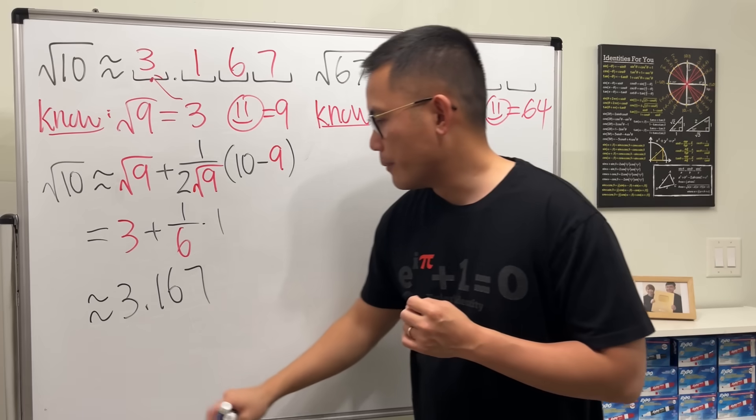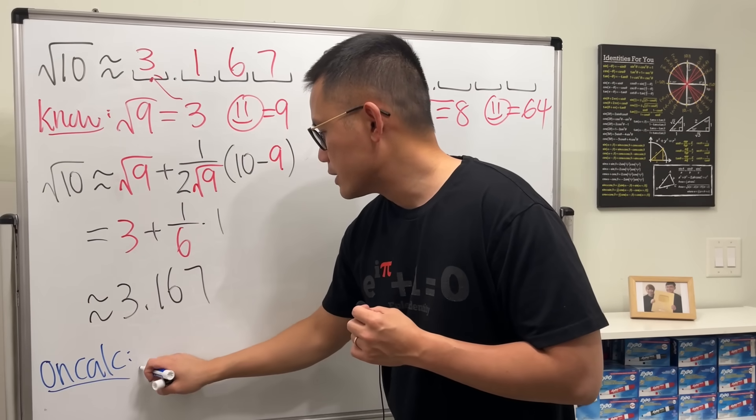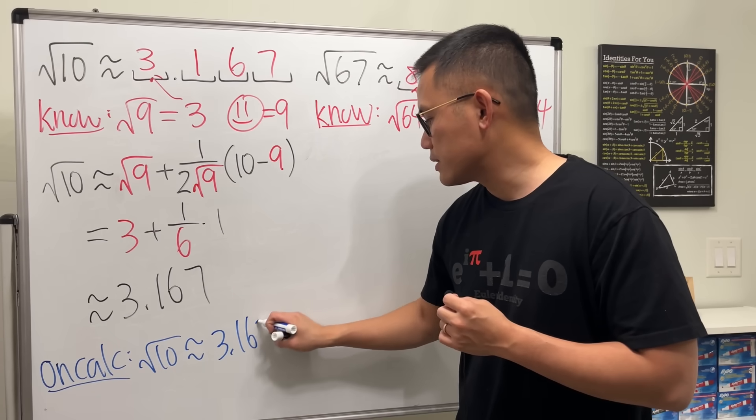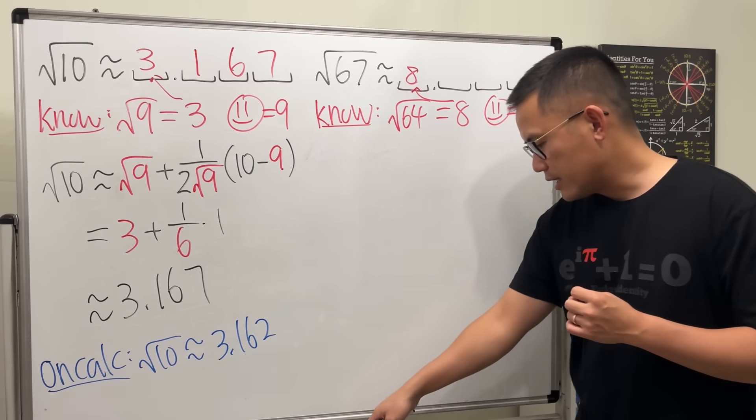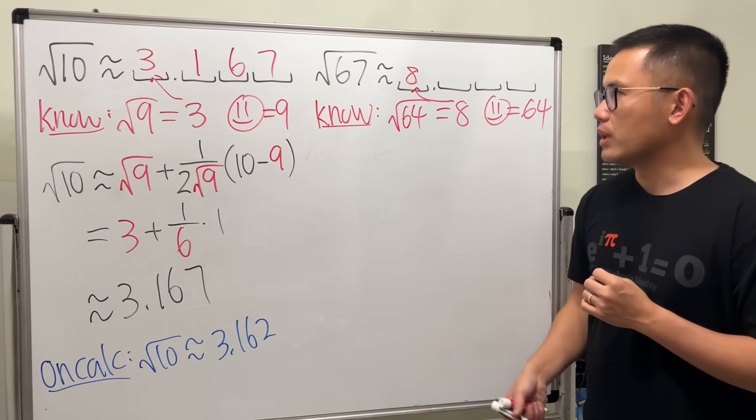And I would like to tell you, though, if you use a calculator, square root of 10 is approximately 3.162. I have the answer written down right here, just to let you guys know. Full transparency. Anyways, let's do another one.